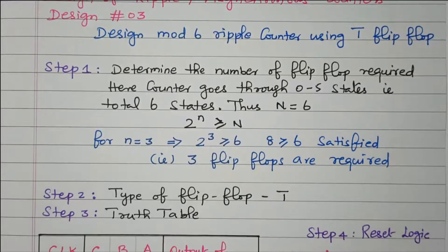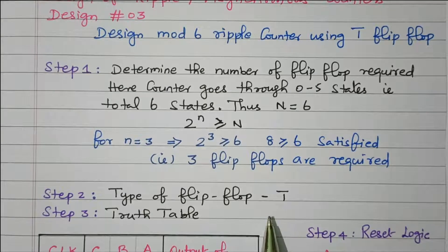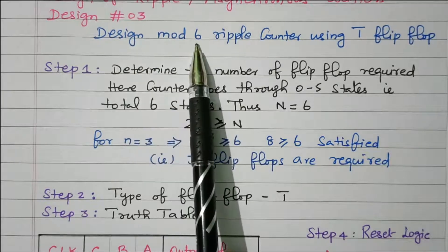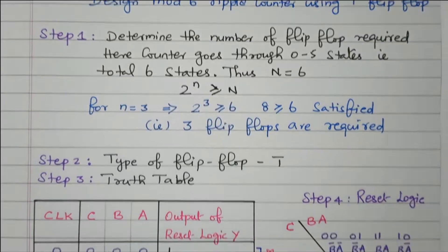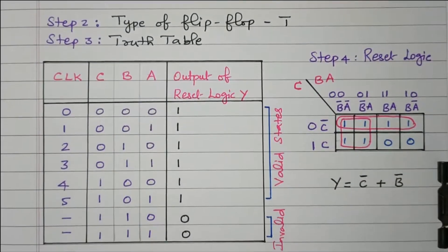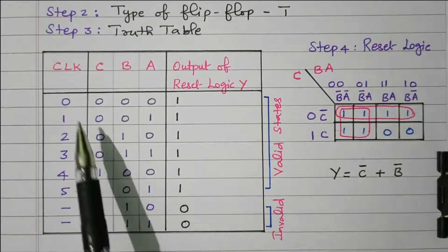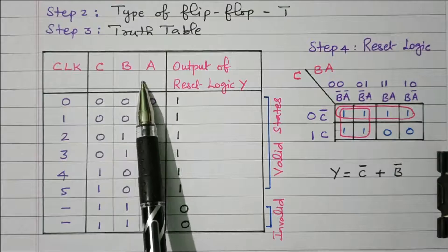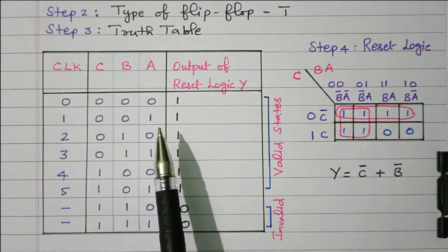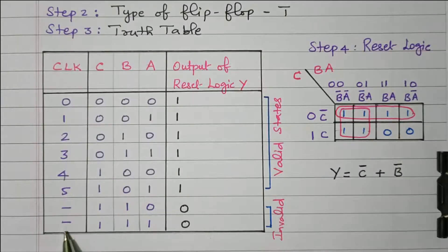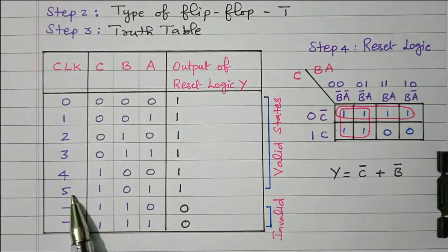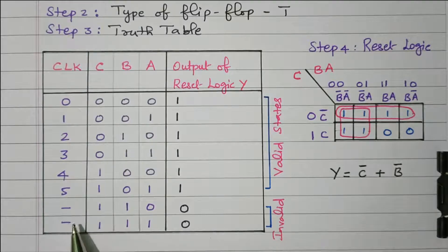Next, we need to find the type of flip-flop. In this problem it is clearly given: T-type flip-flop. If it is not mentioned, we can use any type. Now we will see the truth table based on the design. For Mod 6, the truth table has clock pulse and outputs C, B, A — where A is the LSB and C is the MSB. There are 8 possibilities for 3 bits, but we need only 0 to 5 for Mod 6, and 7 and 8 should be disabled.